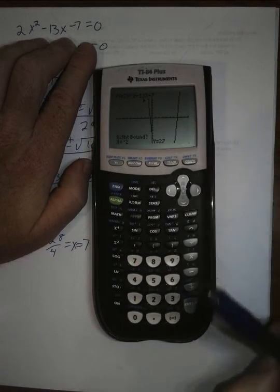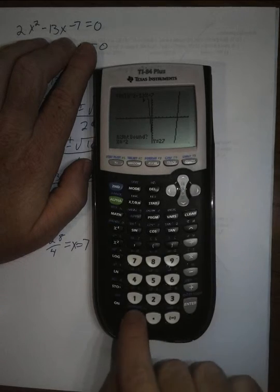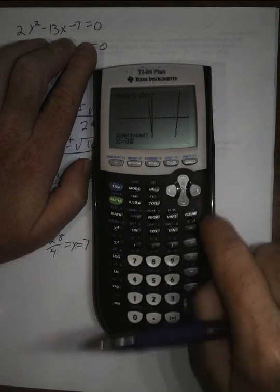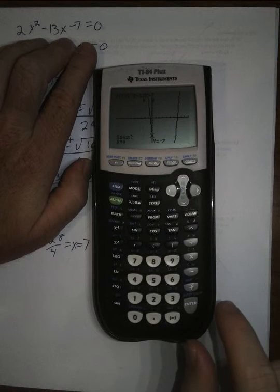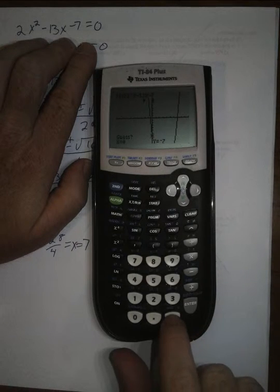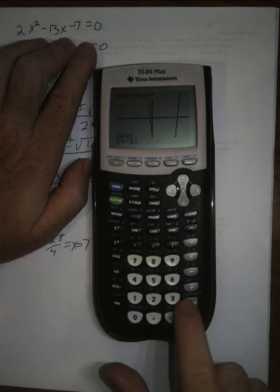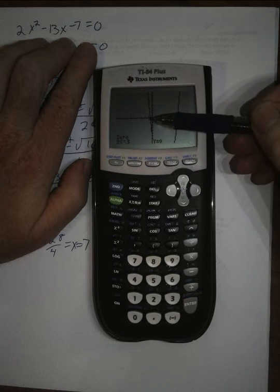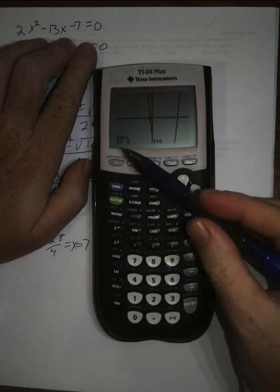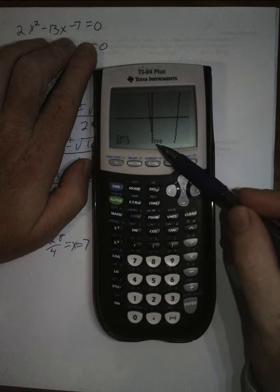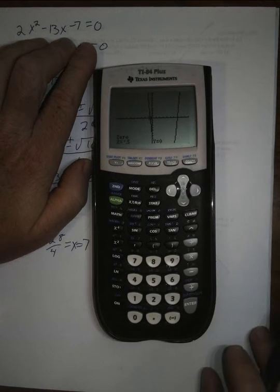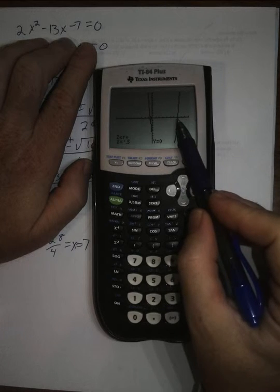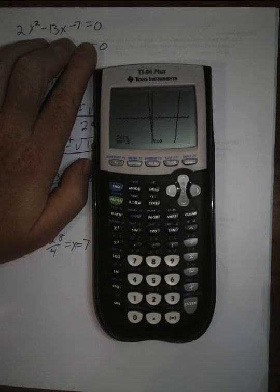And now I'm going to put my right bound. I'm going to type 0. You can also trace along using these arrows to get that. My guess I'm going to put is negative 1. That's between those two. And it uses Newton's method to then find at x equals negative 1 half, y equals 0.